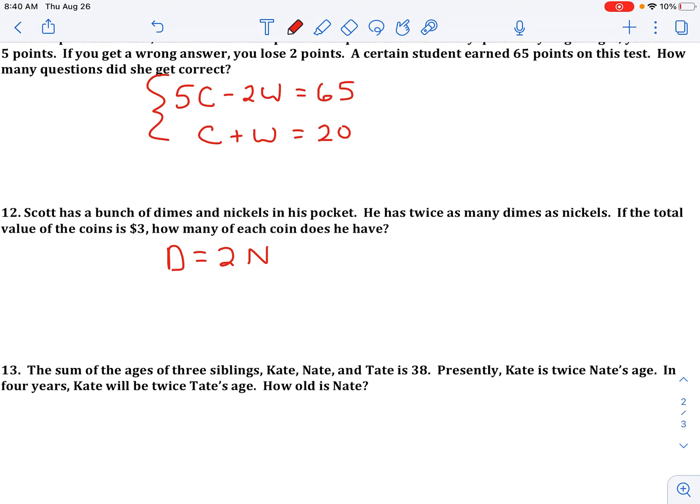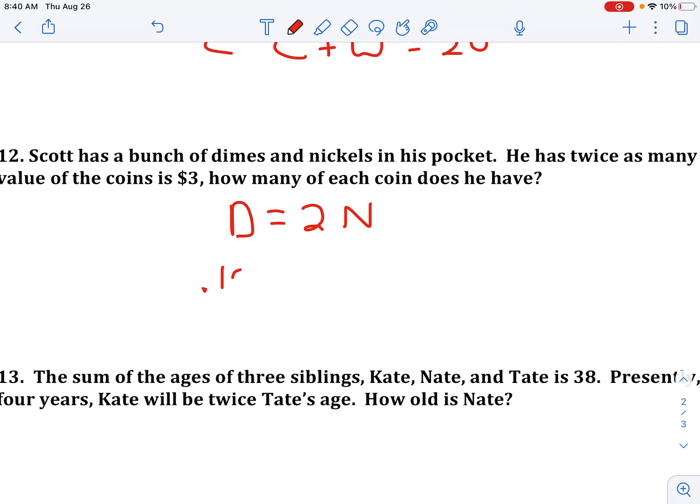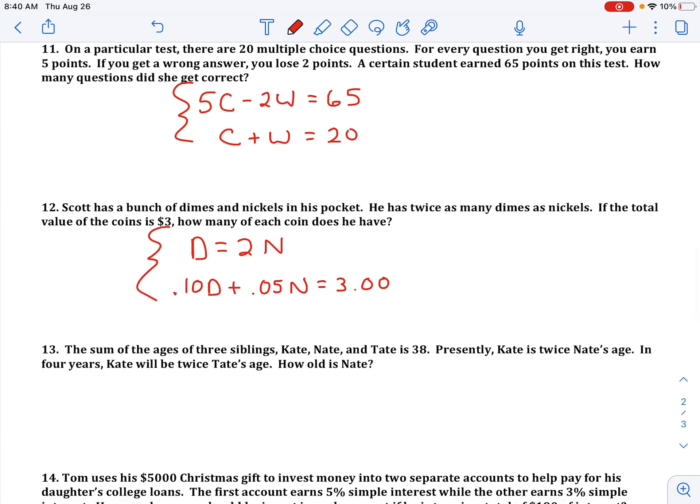So how many of each coin you have, we have a second equation, which is our value equation. Well, dimes are worth 10 cents, so we could write that as 0.10D or just 0.1D. And nickels are worth 5 cents, so 0.05N, and that's going to equal $3. Of course we don't need the zeros there, but just to kind of explain it in terms of money, that would be our 2x2 system.